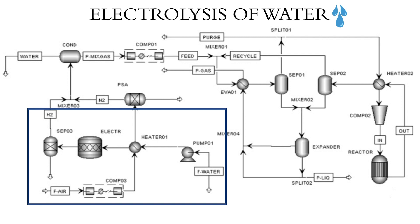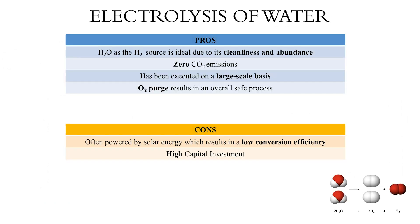Nitrogen is obtained through air separation by a pressure swing adsorption (PSA) system. Electrolyzing water eliminates the need for methane as a reactant and in turn eliminates carbon dioxide as a byproduct. Since water is an abundant natural resource, it is an excellent source of hydrogen for the process. Furthermore, in addition to producing zero CO2 emissions, the process has been successfully scaled up and a growing market for green ammonia is being cultivated in low carbon energy markets.